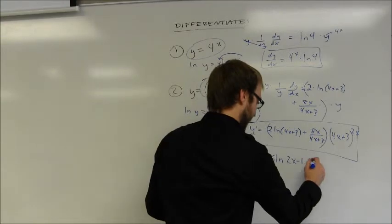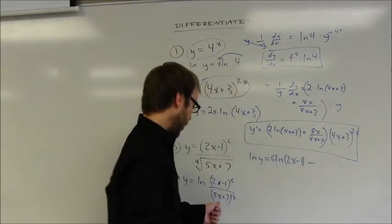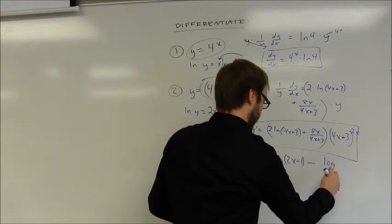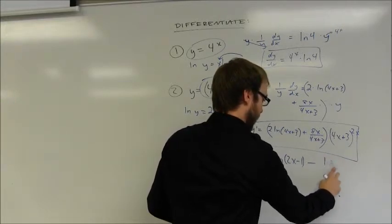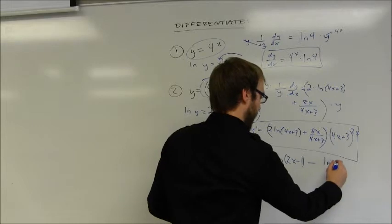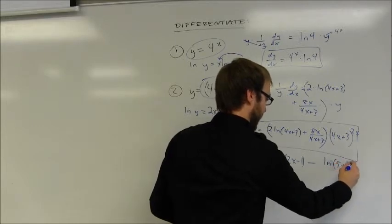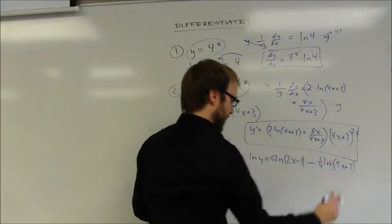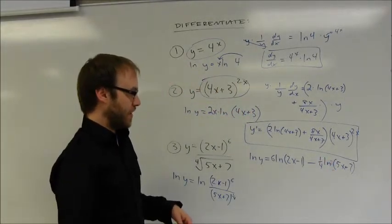And I can subtract the log of 5x plus 7. And again, I have that exponent of 1 fourth, which I can bring out in front. And the derivative here is really not all that bad. That's going to be a 1 over y dy dx.